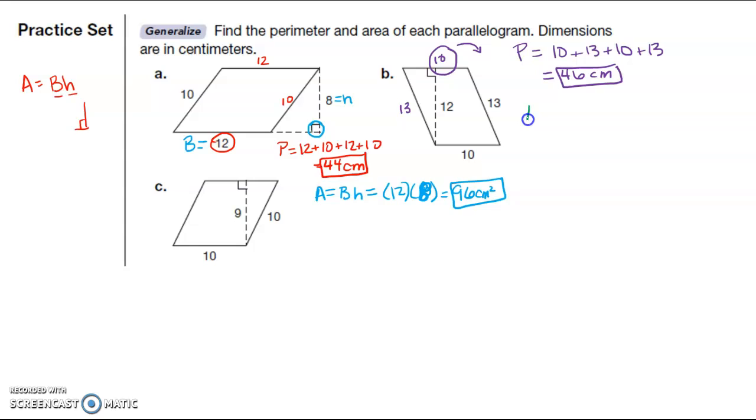And then for the area of this parallelogram, I have base times height. So this is going to be my base. My height has to make that 90 degree angle, so this is my height. 10 times 5 is 50 centimeters squared.